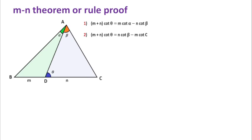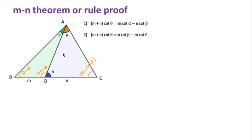Since this angle is theta, the adjacent angle will be 180 minus theta. If this angle is 180 minus theta and this angle is alpha, then the third angle will be theta minus alpha, so that the sum of the three angles is 180. Similarly, if this angle is theta and this angle is beta, then the remaining angle will be 180 minus theta plus beta, so that the sum of those three angles is also 180.